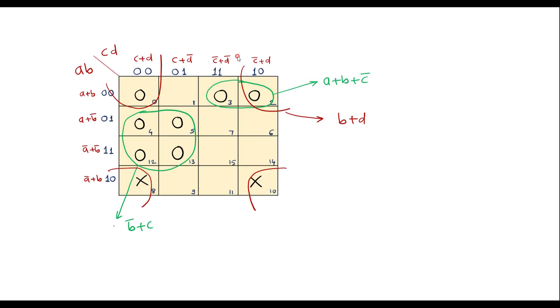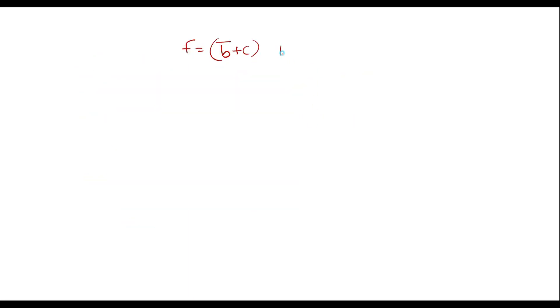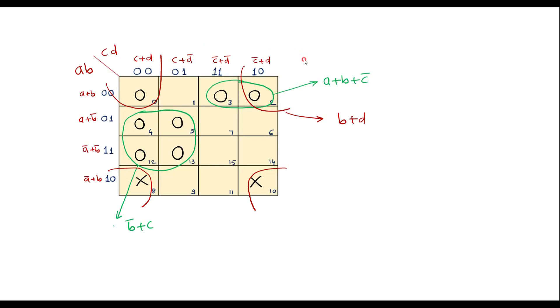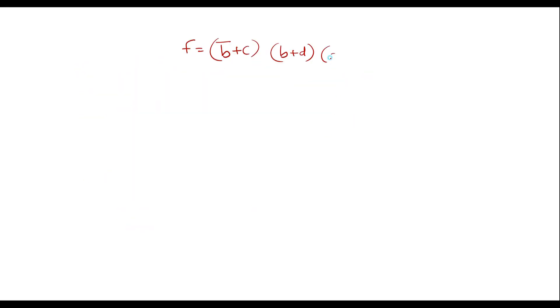So therefore now I can write f is equal to, we have b bar plus c. So these are the max terms, that is nothing but POS, b plus d, product of sum a plus b plus c bar. We have a plus b plus c bar.